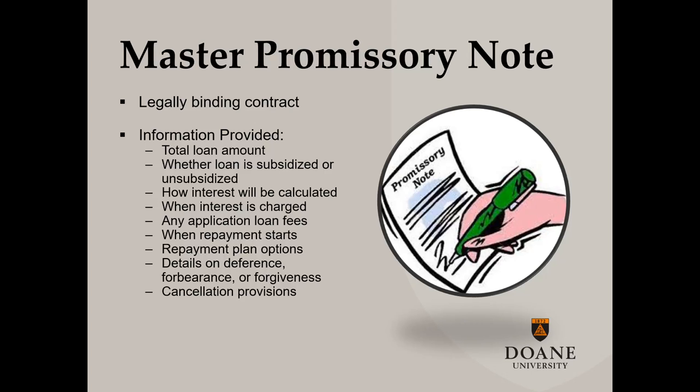So what ties your name to all these loans? That would be what's called the master promissory note. The master promissory note, or MPN, is the legal contract in which you agree to repay the amount you borrowed plus any accrued interest and fees. It's also a good source of information about your loans, such as how interest is calculated, when interest is charged, available repayment plans, late fees, collection charges, and deferment and cancellation options.